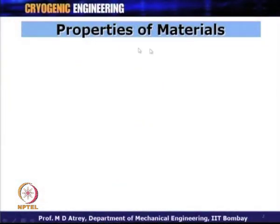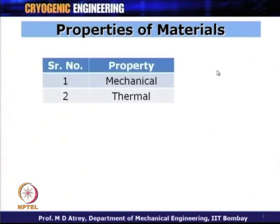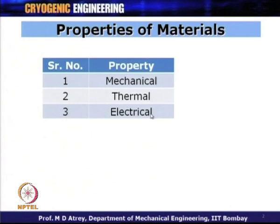This is the 7th lecture on cryogenic engineering under the NPTEL program. What we are studying right now is the properties of materials at low temperature. This topic we have been studying since the last two lectures and this is the third and last lecture covering this topic. We have been covering various properties under different subheadings: mechanical properties, thermal properties, electrical properties, and finally magnetic properties at low temperature.